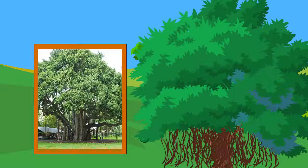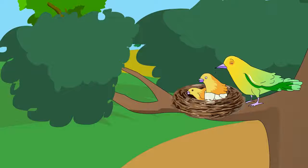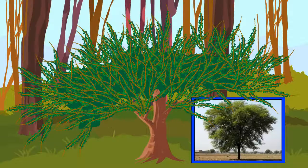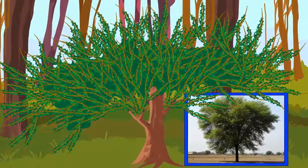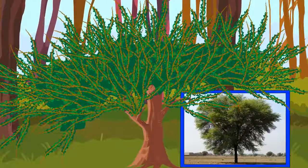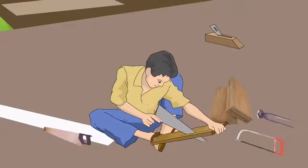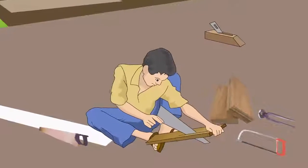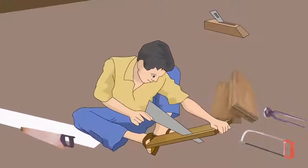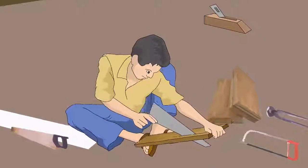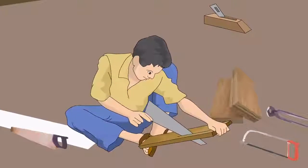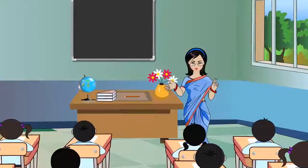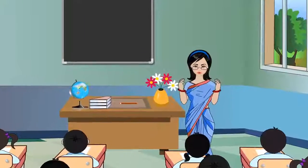Banyan is one of the biggest trees, with aerial branches. It is a home to many tiny animals. Kikar is a tough tree and can grow almost anywhere. Its wood is used to make wheels of bullock carts and furniture.